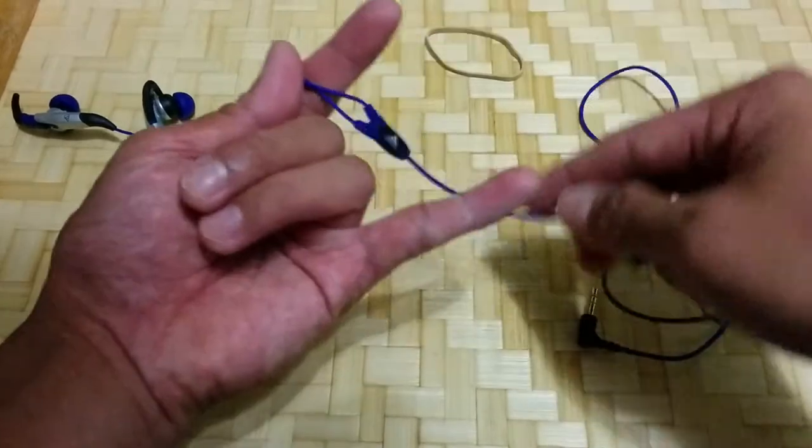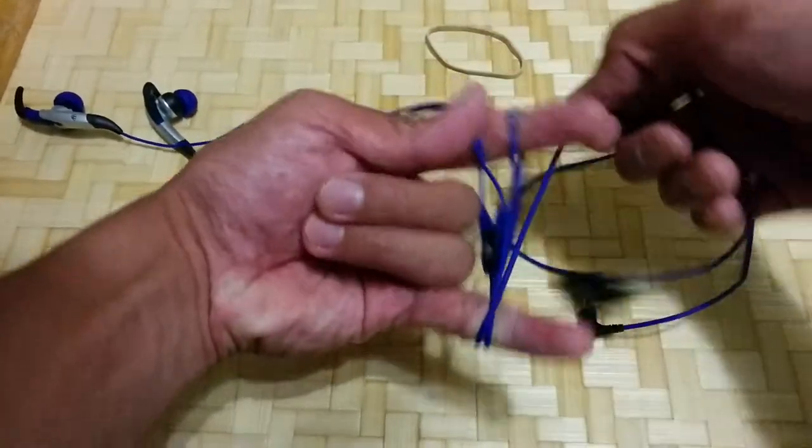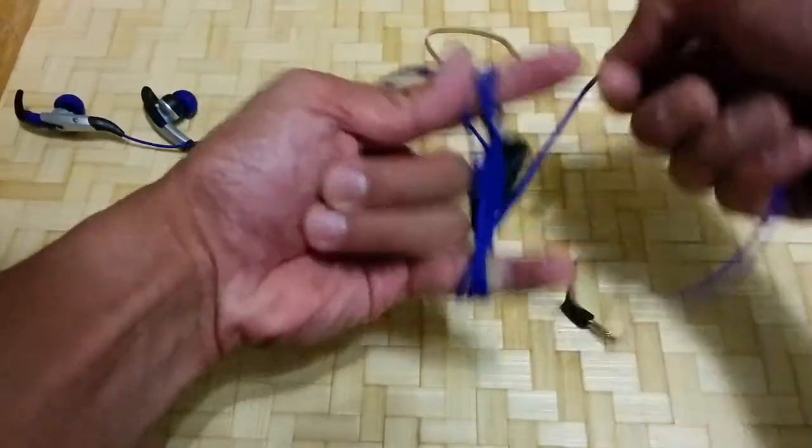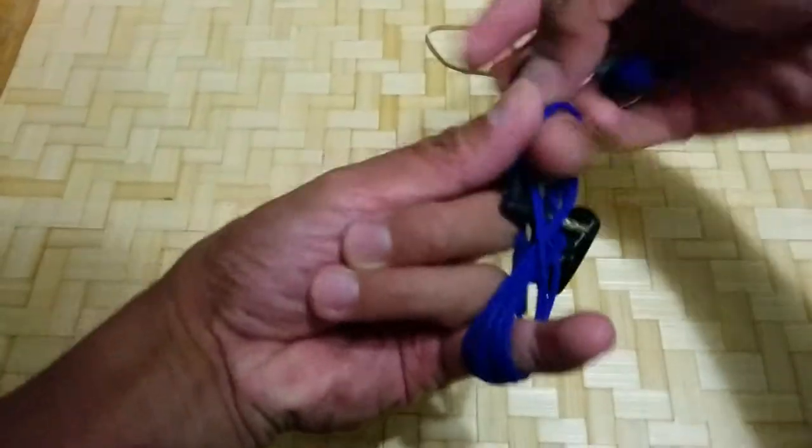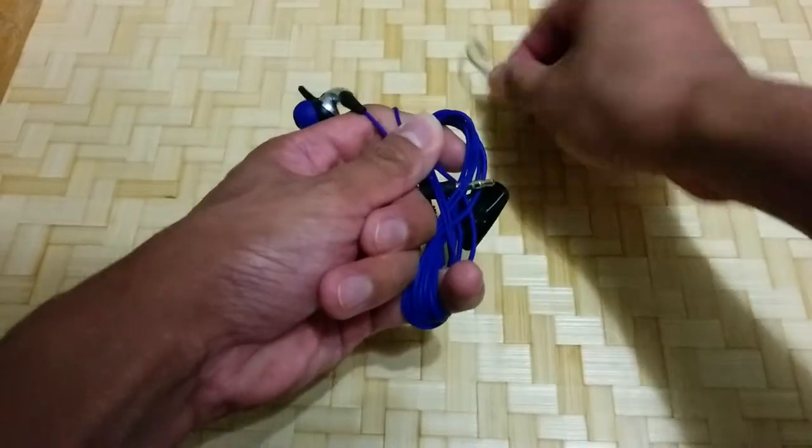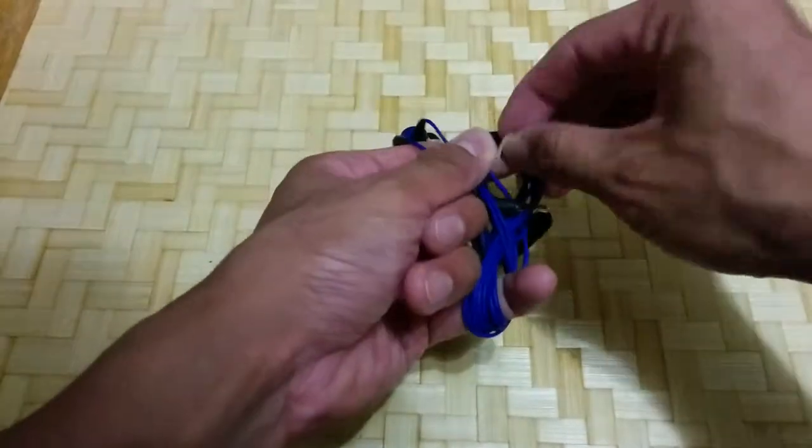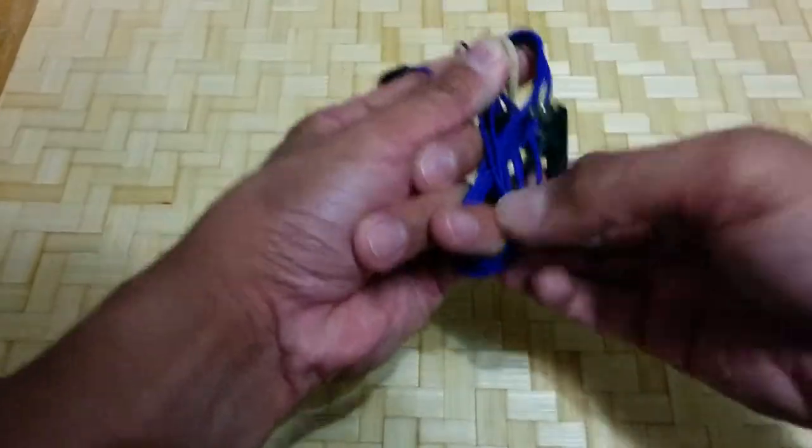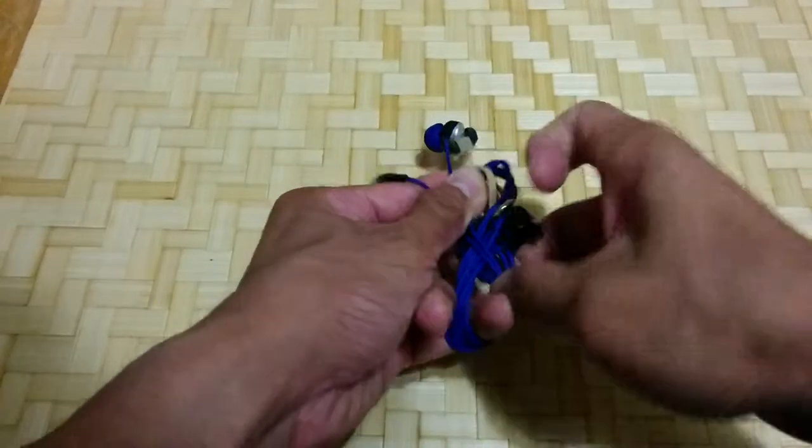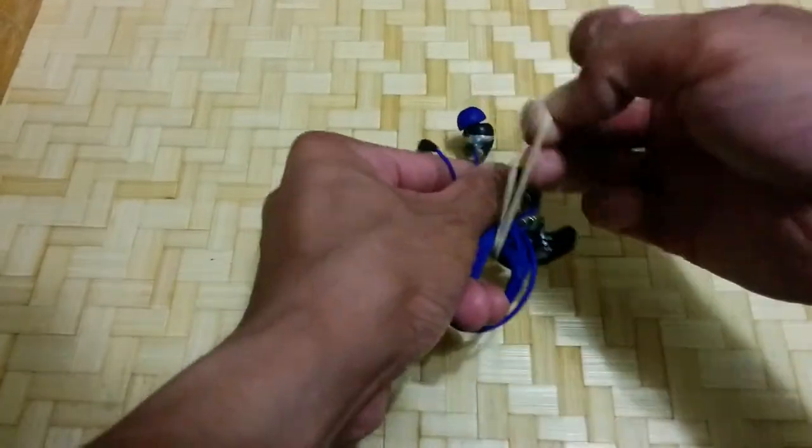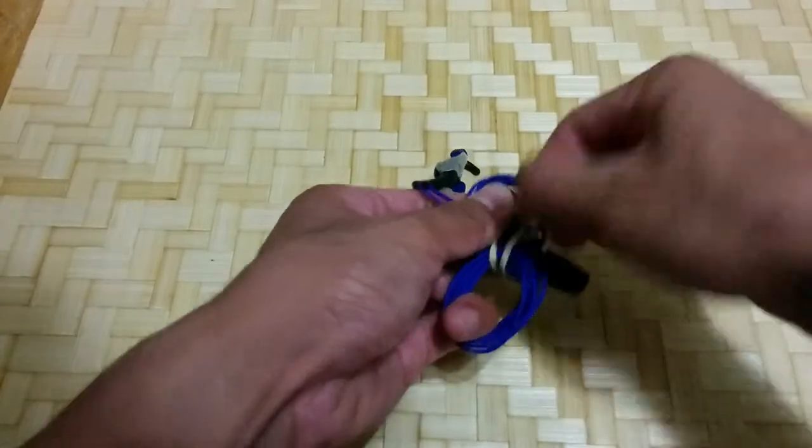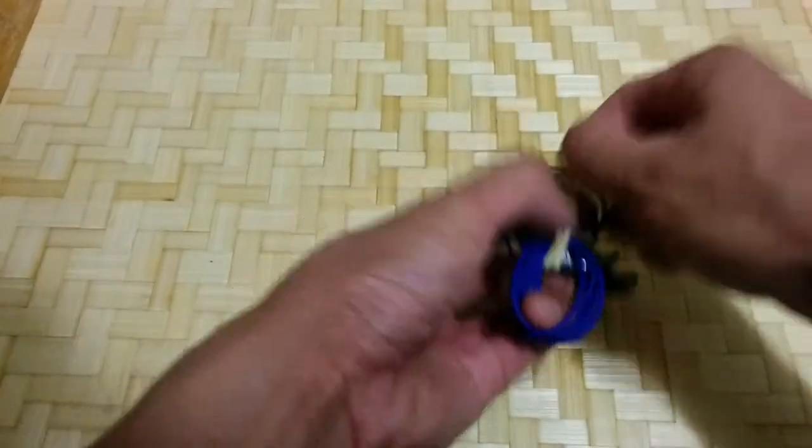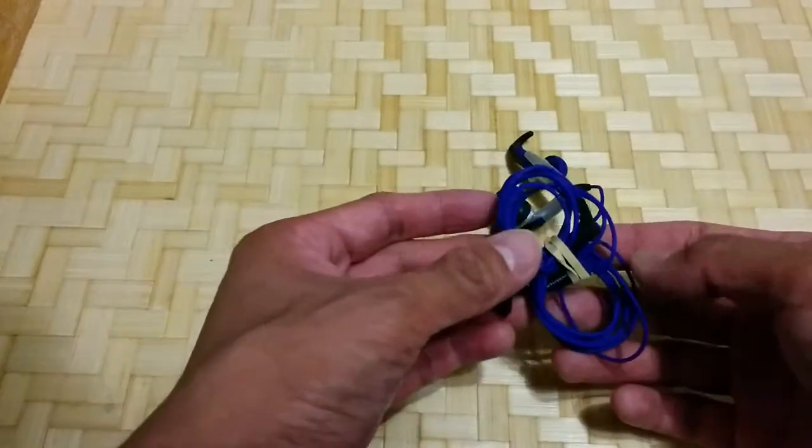I'm going to coil between these two fingers into a figure eight motion, then feed the rubber band through the top. Pinch. Feed the rubber band through the bottom. Pinch. Loop it twice on the rubber band to cinch it into position, and there you go.